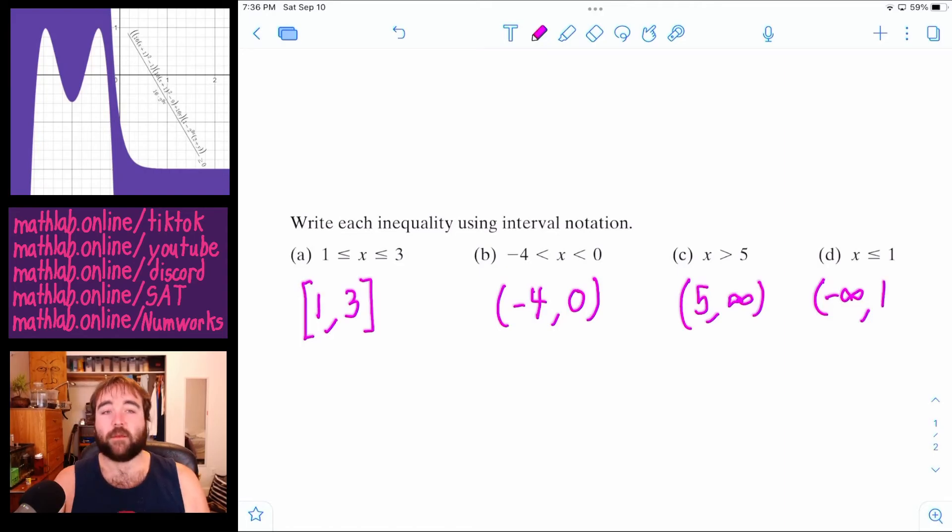And then the biggest thing it can be is one. But it can be one. So we're going to put a bracket on that one. So see, often, one of them will have a parenthesis and one of them will have a bracket. There's nothing wrong with that.